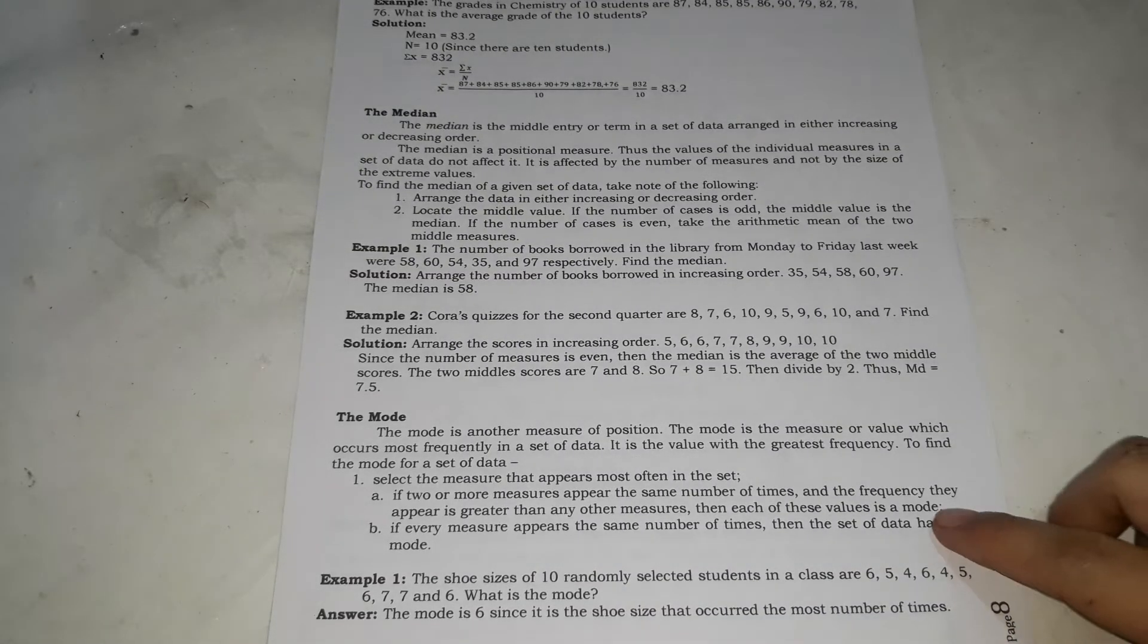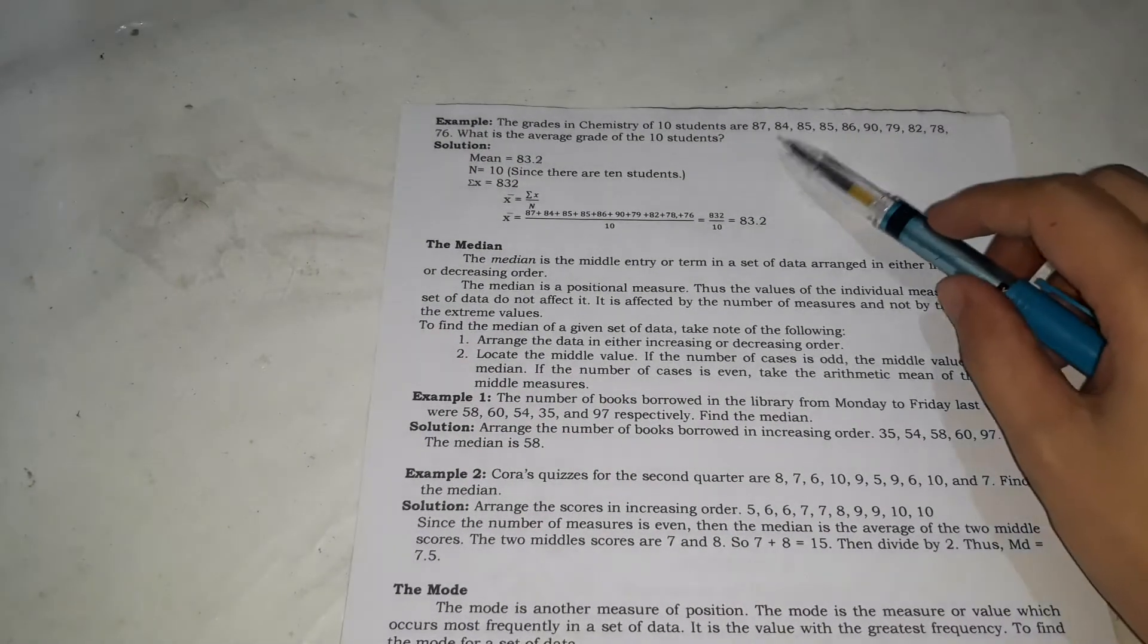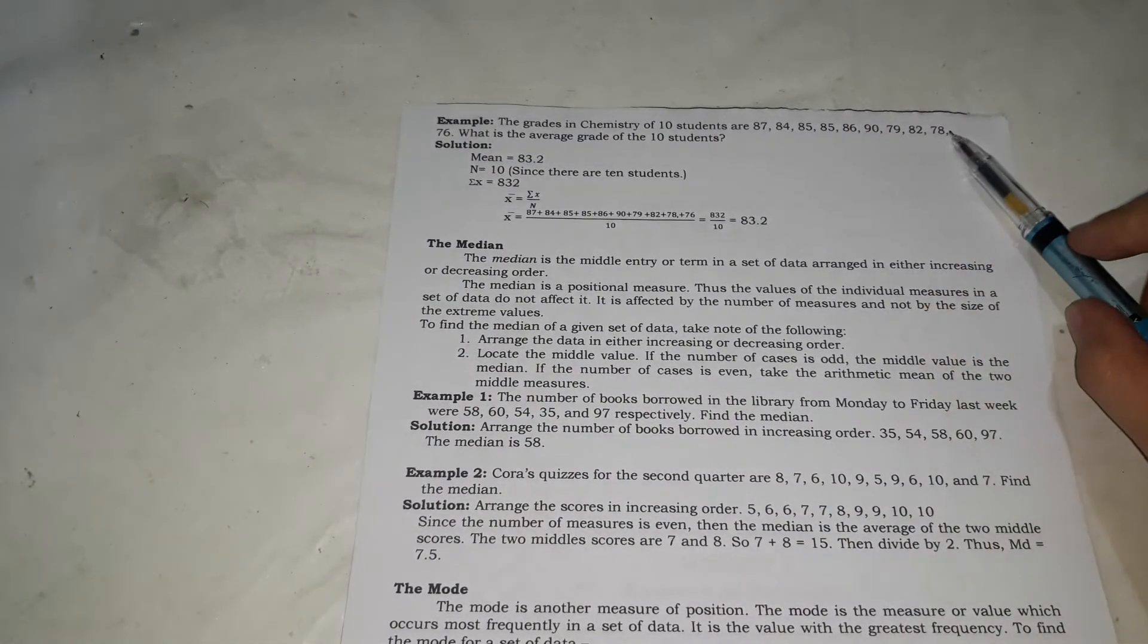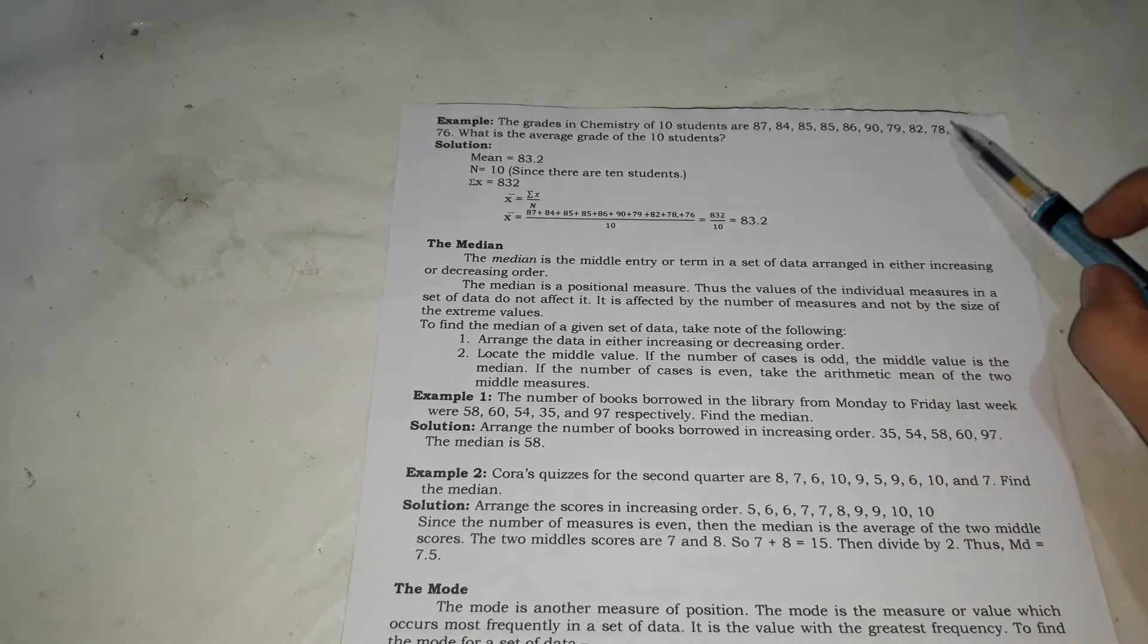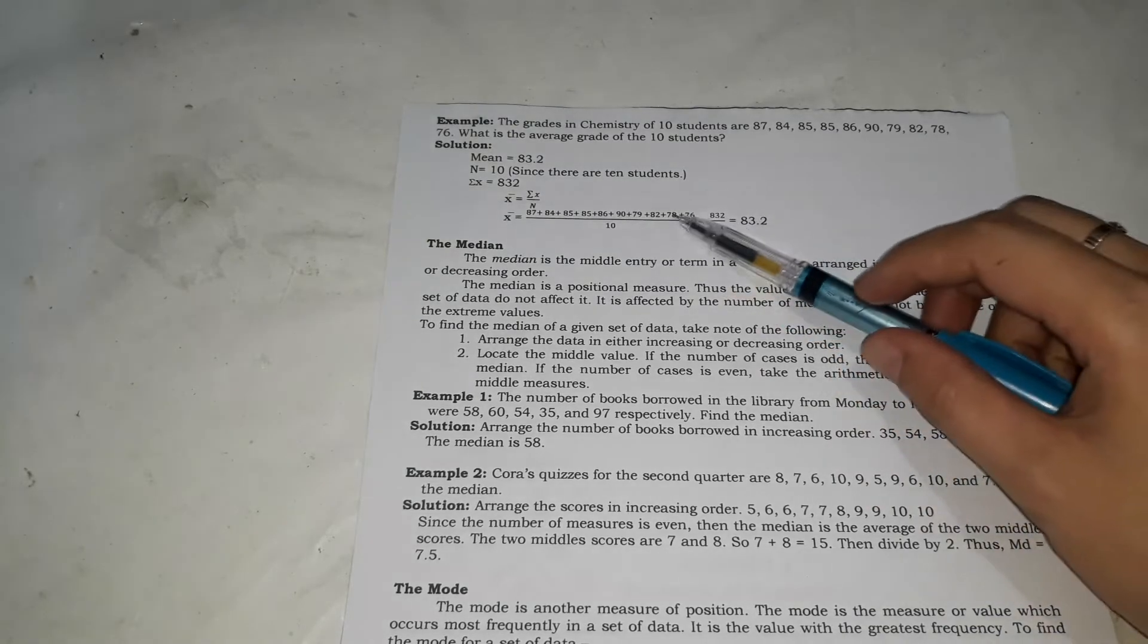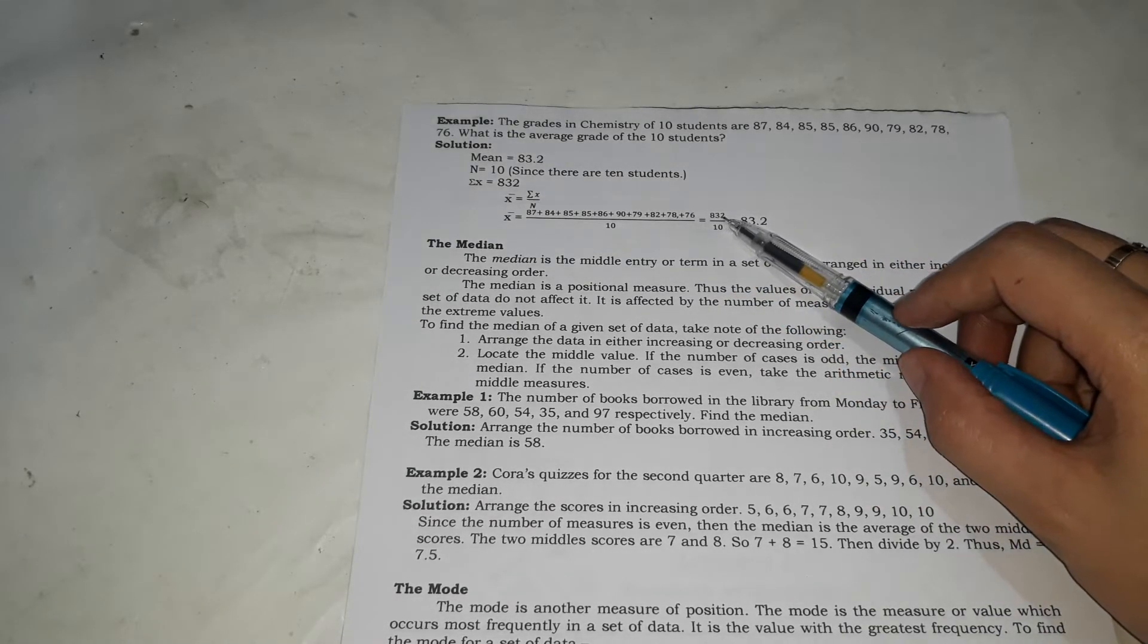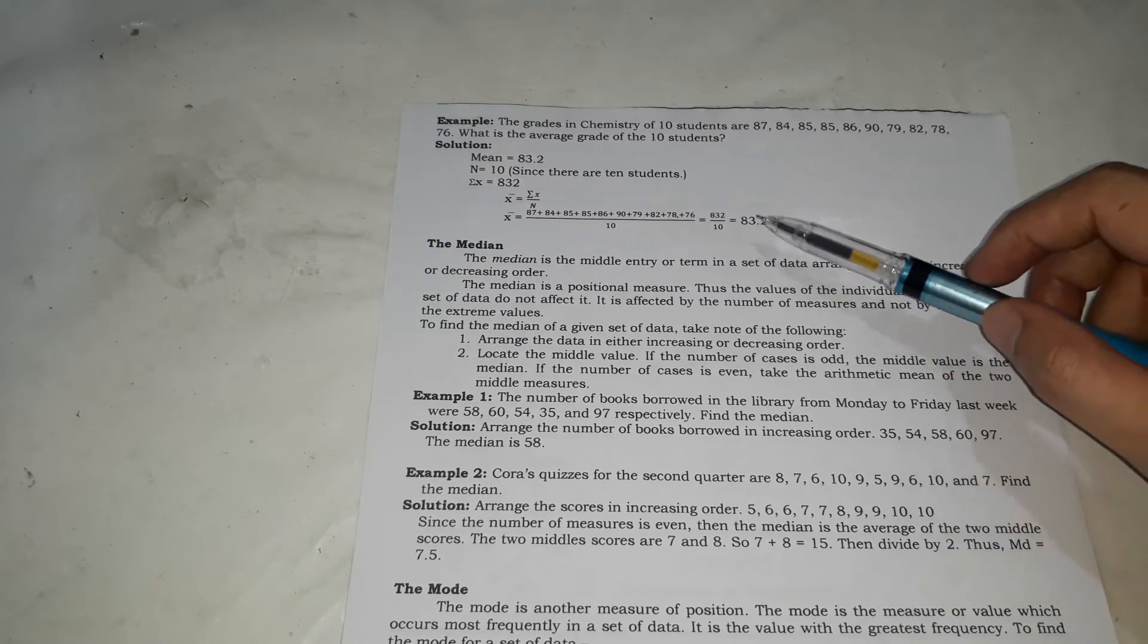This is an example. So all I have to do is, ito yung mga grade nya, i-plus mo lang yan lahat, tapos i-divide mo kasi one, two, three, four, five, six, seven, eight, nine, ten, kasi ten sila. So divide mo by ten. So kapag i-plus mo sila, that's 832, divide by ten, it's 83.2. That's for the mean.